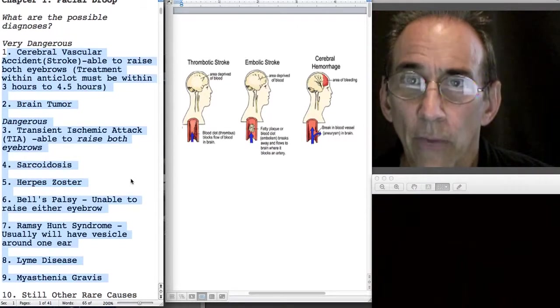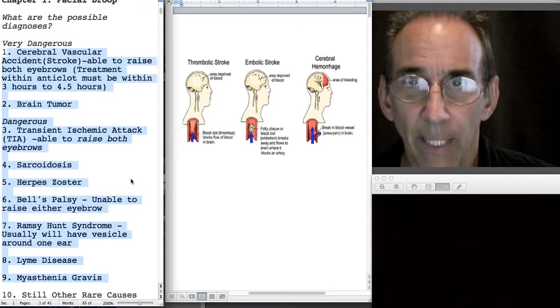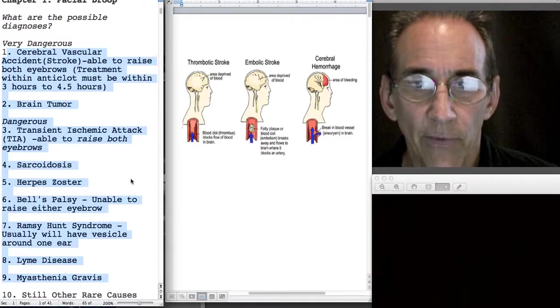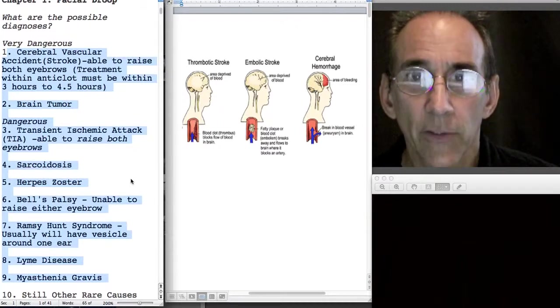There are approximately nine different basic causes of facial droop. Most of these are fairly impractical and very unlikely to occur, and if they do occur they're fairly likely to be self-evident. The most dangerous of these is probably a stroke.